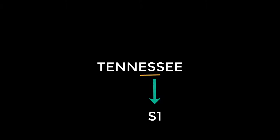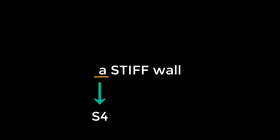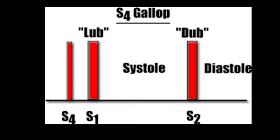S4 is remembered with the pronunciation of the word 'Tennessee' — S4 being the 'ten', S1 being the 'nes', and S2 being the 'see'. Another mnemonic for the cadence and pathology of S4 is 'a stiff wall' — A being S4, stiff being S1, and wall being S2. Practice saying 'a stiff wall' aloud as you listen to S4.